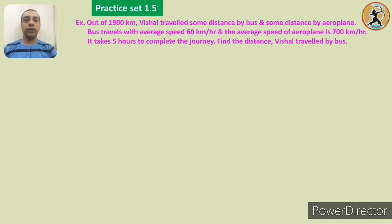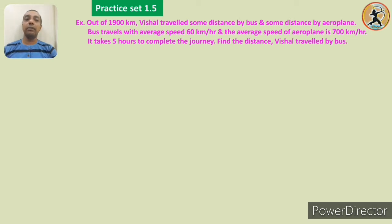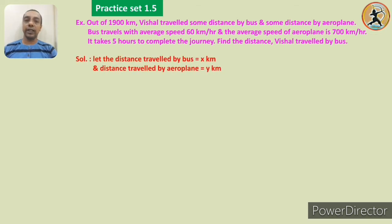The next example: out of 1900 kilometres, we shall travel some distance by bus and some distance by aeroplane. The bus travels at an average speed of 60 kilometres per hour and the aeroplane at 700 kilometres per hour. It takes 5 hours to complete the journey. Find the distance travelled by bus. Let the distance by bus be x kilometres and by aeroplane be y kilometres.